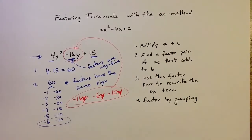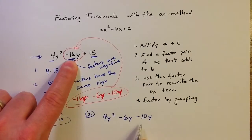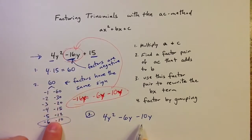So step 3 is to rewrite the expression as 4y squared, and then instead of negative 16y, I'm going to do negative 6y minus 10y. So just rewriting that with an equivalent expression, but using those two terms that we found, using the factors that multiply to equal positive 60 and add to equal negative 16.